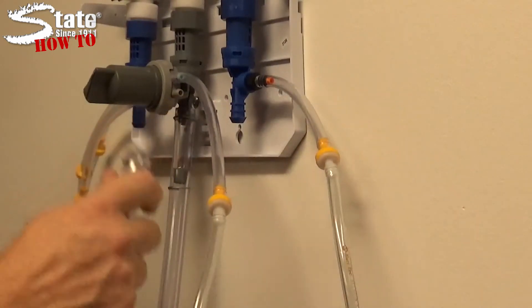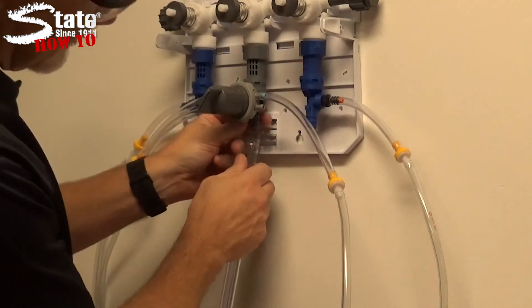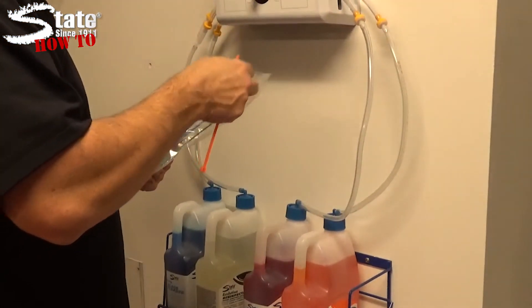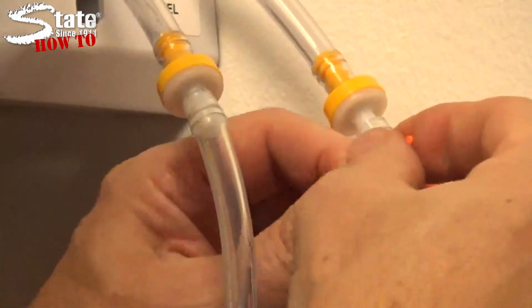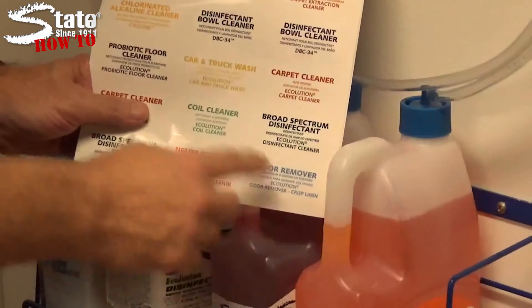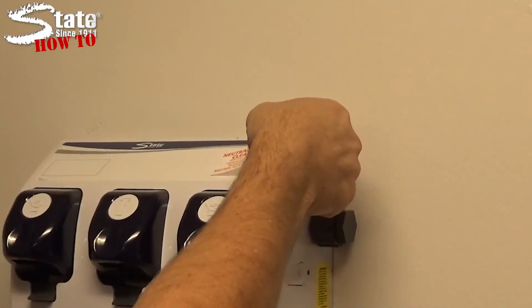Next, attach the long dispensing hoses to the outside bucket fills and the short hose to the quart bottle fill. Finally, using the provided color-coded zip ties, gently tighten the corresponding color of the zip tie to chemical feed tube. Be sure to properly label your unit with the provided stickers so you always know what chemicals are being dispensed.